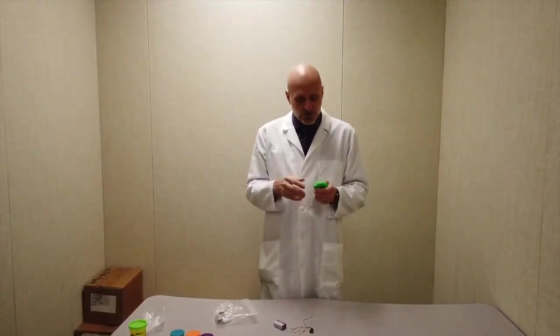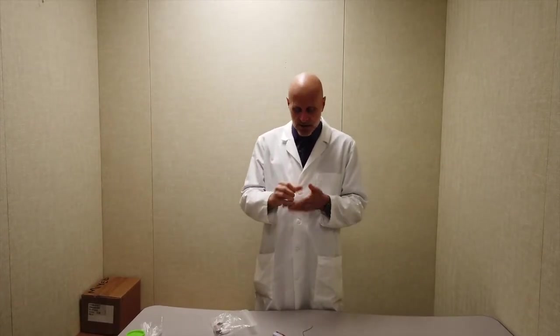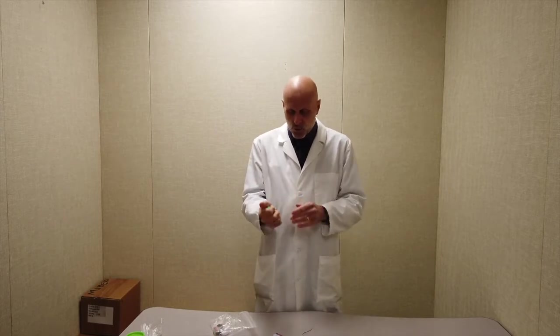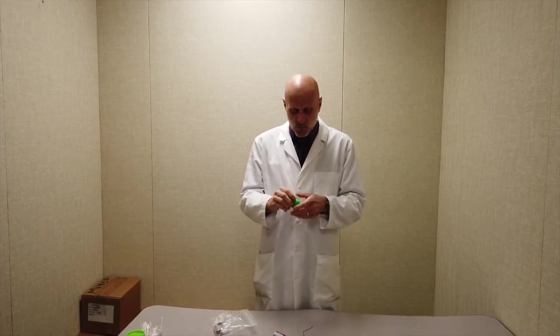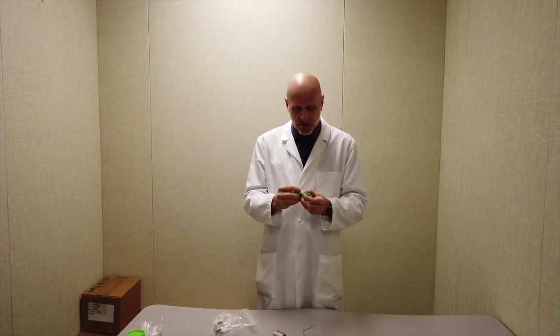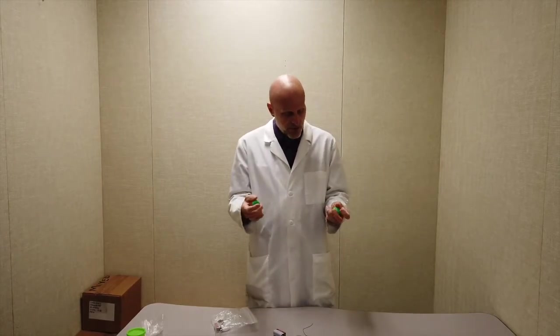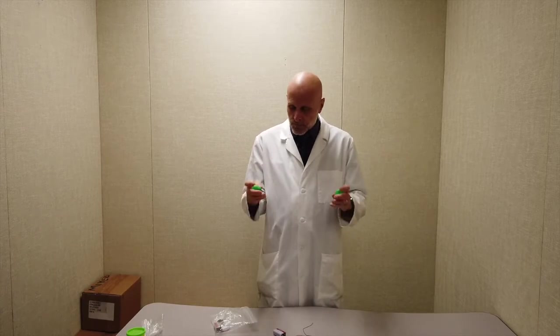The first thing I have the students do is take out their modeling dough and knead it in their hands to get it nice and soft and pliable. Start working it. And I have quite a bit here so that you can see it better. And once it's soft, they're going to separate it into two lumps, two equal sized lumps, and round them out into spheres.